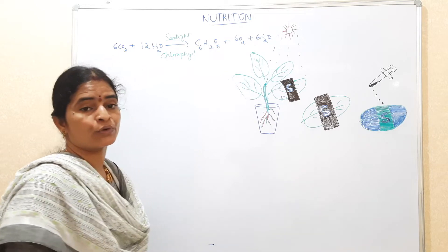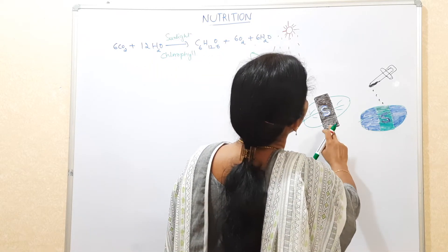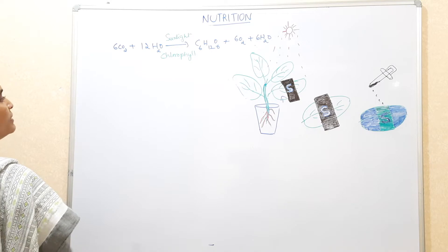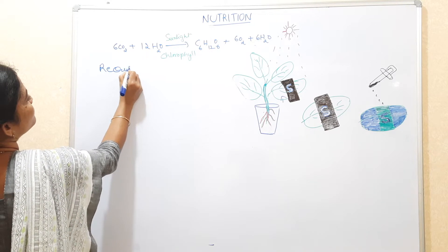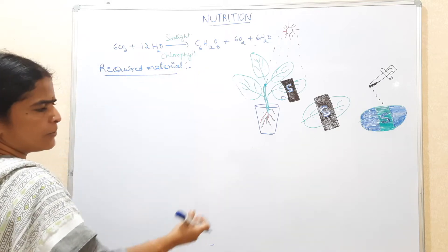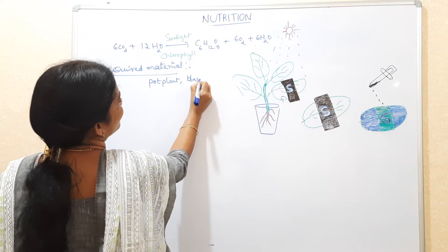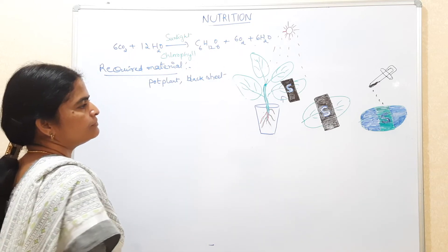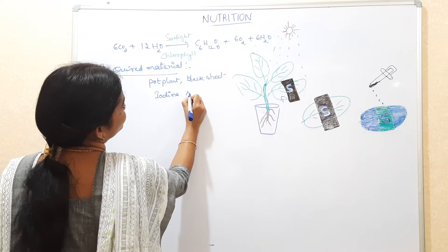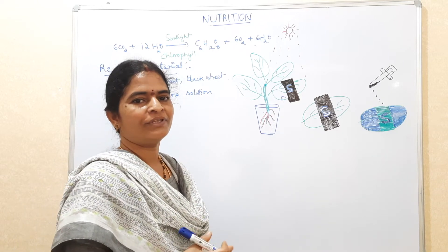Today we will do an experiment to show how sunlight is necessary for photosynthesis. I already drew this diagram to save time during teaching. The required materials for this experiment are very few: a pot plant, a black sheet of paper, and iodine solution. Iodine is used to test for starch.